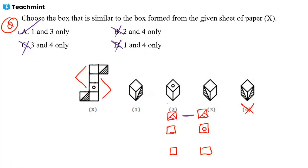For option one — half-shaded and one empty — that is okay. Third one: this empty, this empty — third one is also possible. One and three are okay. Now what is the problem with option two?